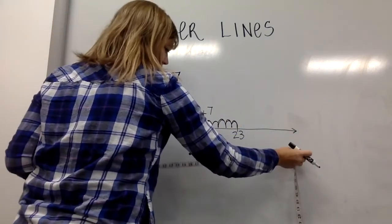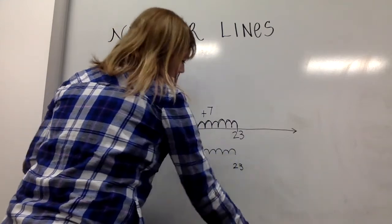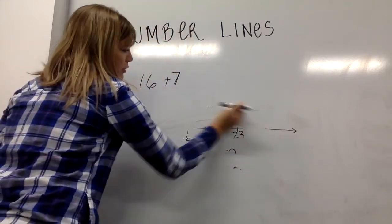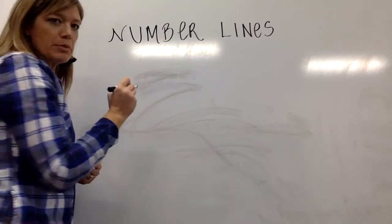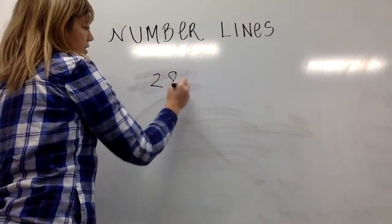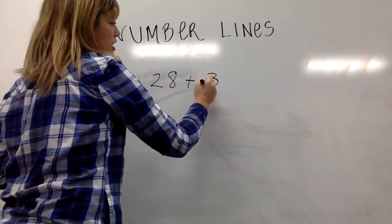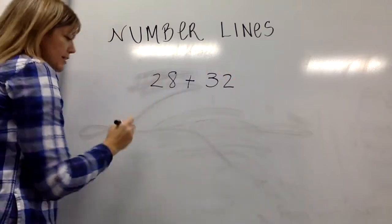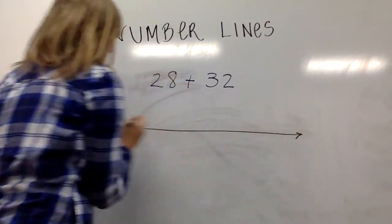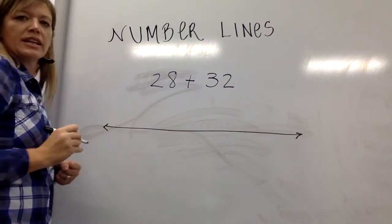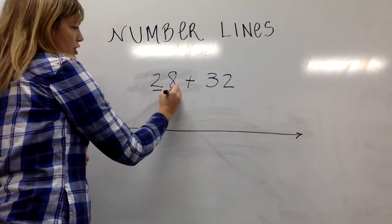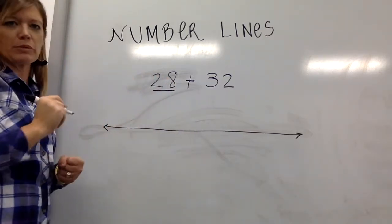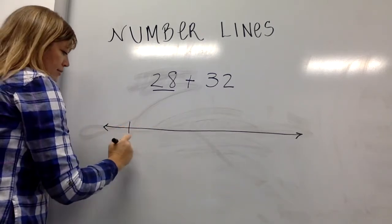Without the fixed number line here, we can think about our open number line in a lot of different ways. For example, let's think of the problem 28 plus 32. On my open number line, I'm going to choose the place where I want to start. Let's say that I choose to use this first numeral as the place where I'm going to start. I'm going to place 28 right here.